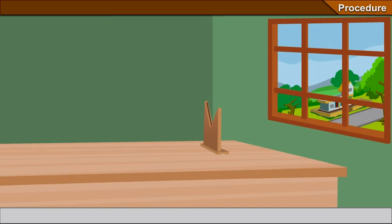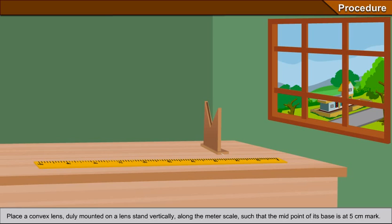Place the meter scale in the direction of the object. Place a convex lens duly mounted on a lens stand vertically along the meter scale such that the midpoint of its base is at 5 cm mark.